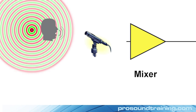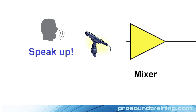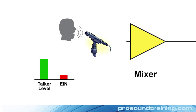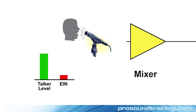Even with good mics, the people that use them need to speak like they want to be heard. Another way to improve the signal-to-noise ratio is to speak closer to the mic. Each time you halve the distance to the mic, the SPL that enters it is about 6 dB higher. The EIN is unchanged, so the signal-to-noise ratio improves with decreased mic-to-source distance.